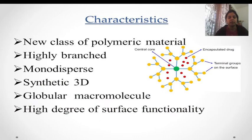The characteristics of dendrimers: they are a new class of polymeric material at the nano level, and they are highly branched.